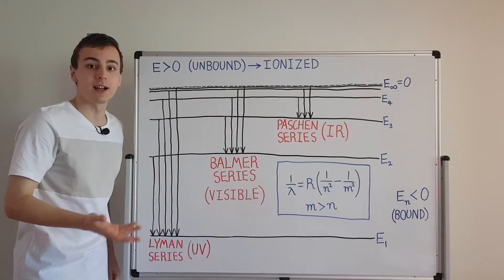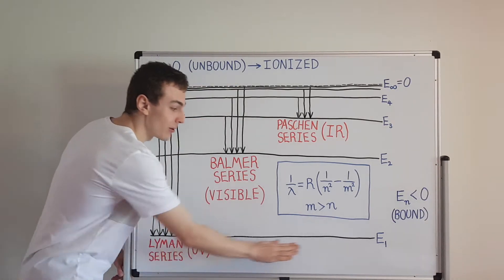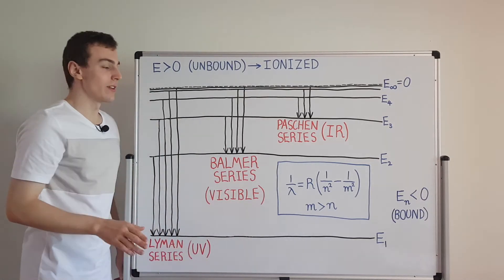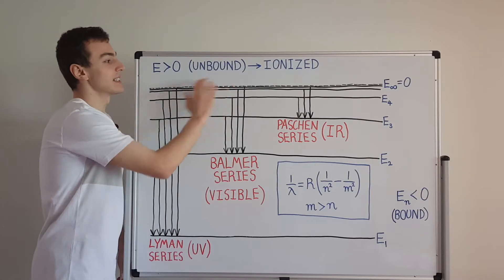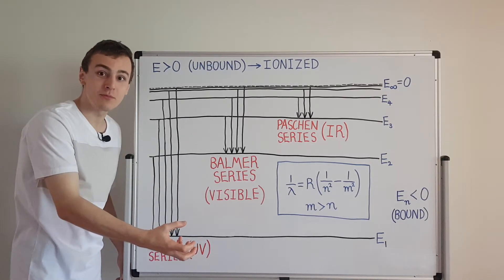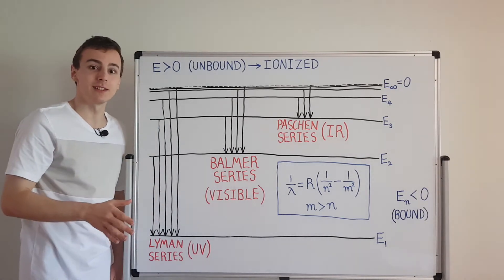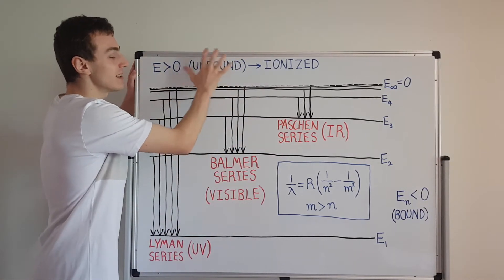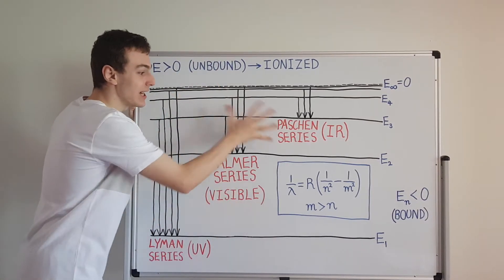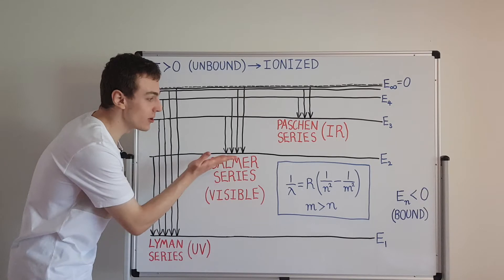There is another way you can define the energy: you can set zero to be the ground state, making all energies positive. But with that convention you lose the neat distinction between positive and negative, where the sign of the energy tells us whether the electron is trapped in the atom or is a free particle. The most important distinction is that unbound positive-energy states have a continuous spectrum — any energy is allowed — while bound states have only a discrete spectrum, so only a fixed set of energies are allowed.